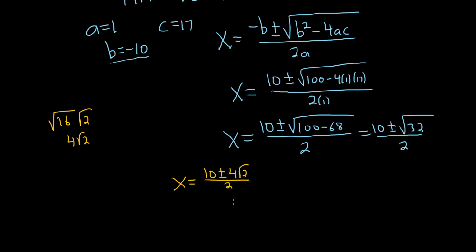And then we can break this up as follows. This will be 10 over 2 plus or minus 4 square root of 2 over 2. So that's 5 plus or minus 2 square root of 2.